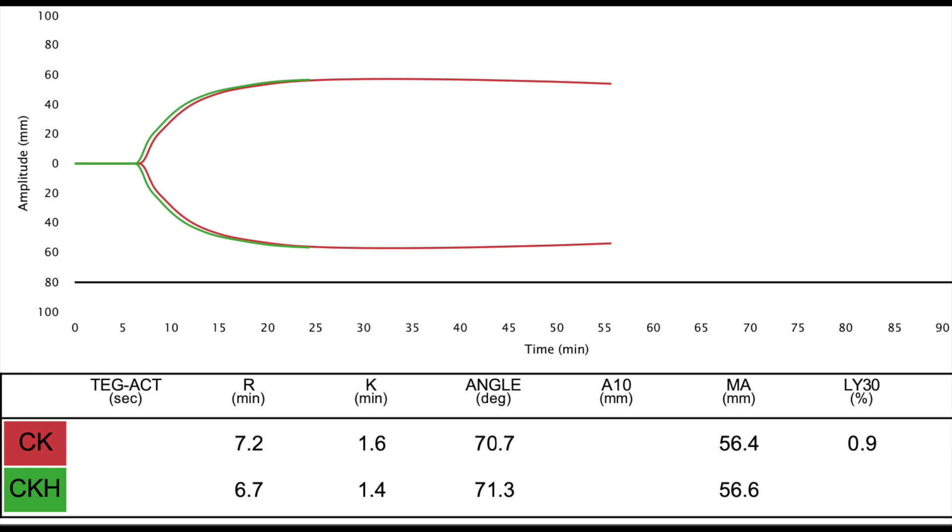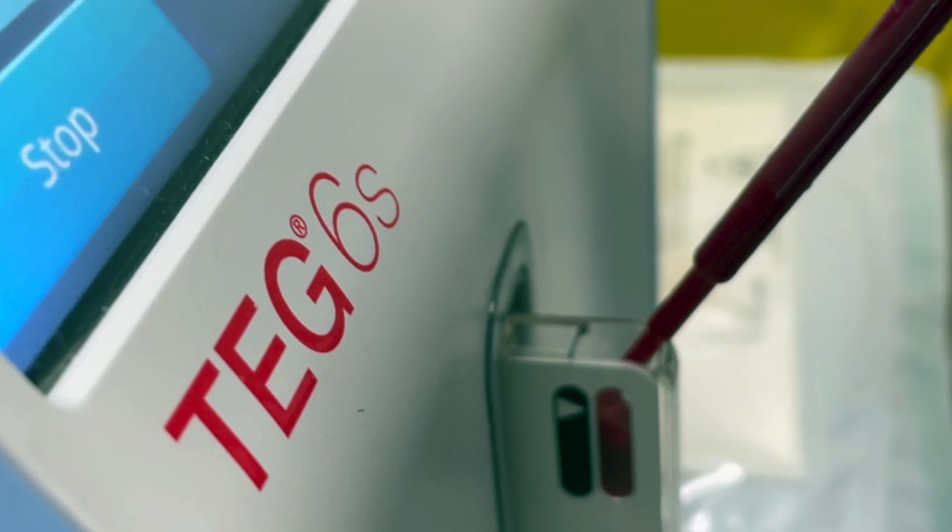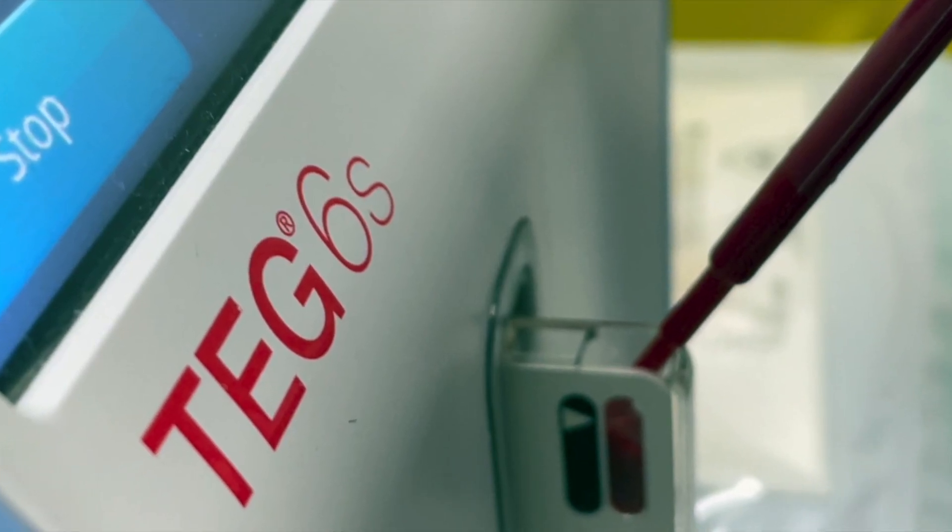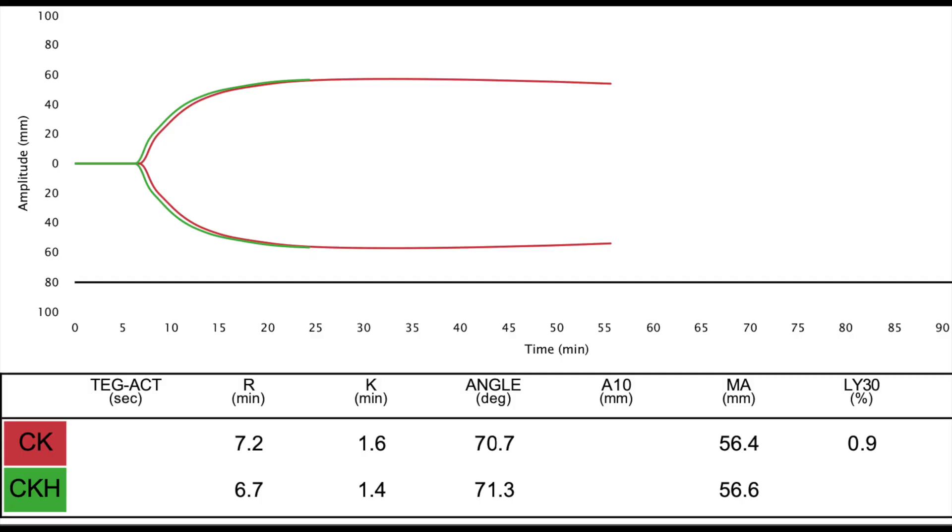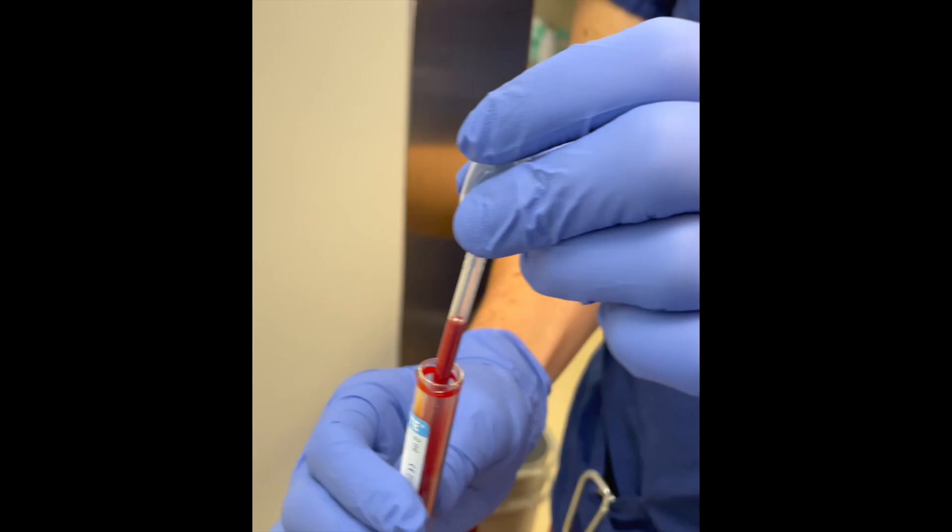TEG is a non-invasive test that measures the ability of whole blood to form a clot and reduce the use of unnecessary blood products. It also distinguishes between surgical and coagulopathic bleeding.